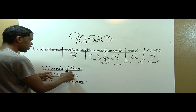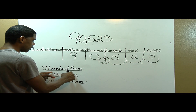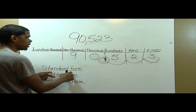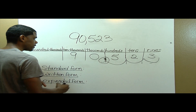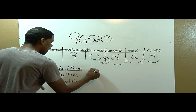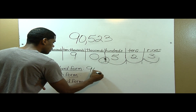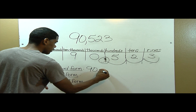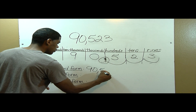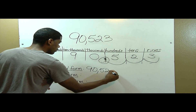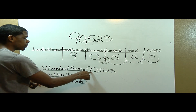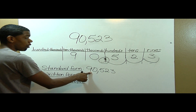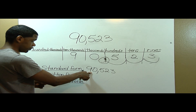What does it look like in standard form? Standard form is just the numeral itself. We say ninety thousand five hundred twenty-three. Standard form is the numeral or the number.